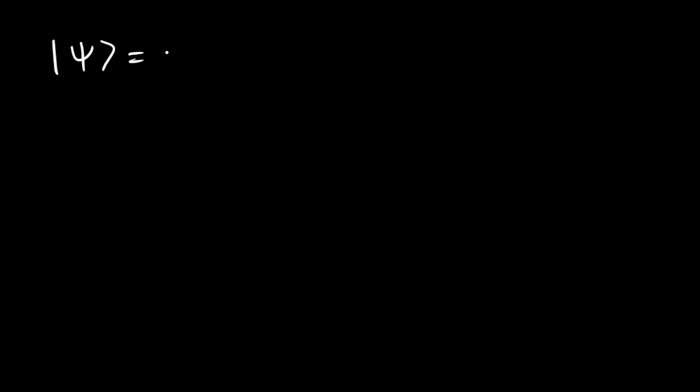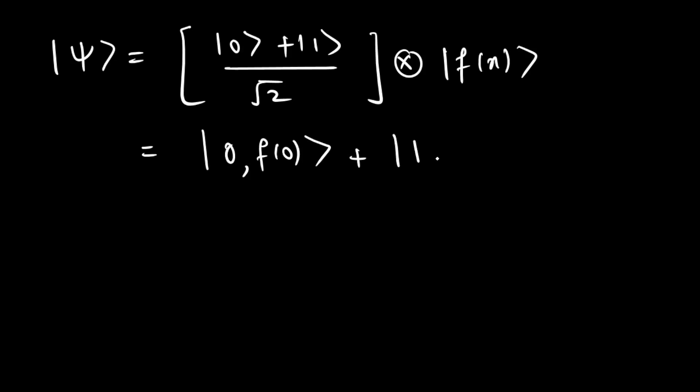So ψ can be written as (0 + 1) / √2 tensor product f(x). So if our x value is 0 then f(x) would be f(0) which is tensor product with a 0 state. Similarly if our x value is 1 then f(x) would be f(1) which is tensor product with the state 1.